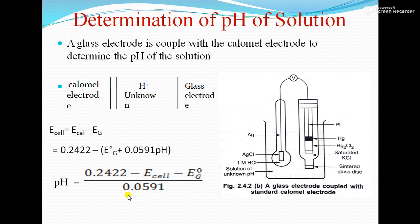So that is the reference electrode — the calomel electrode — and the indicator electrode as the glass electrode. Thank you.